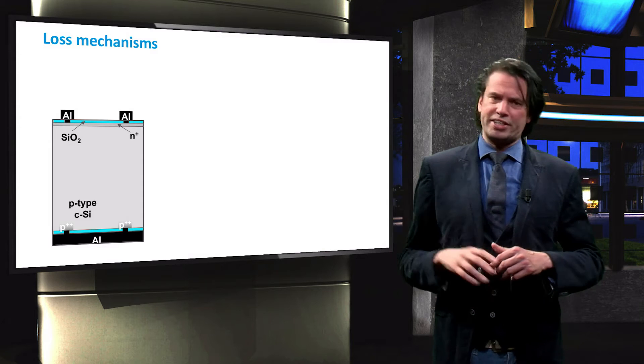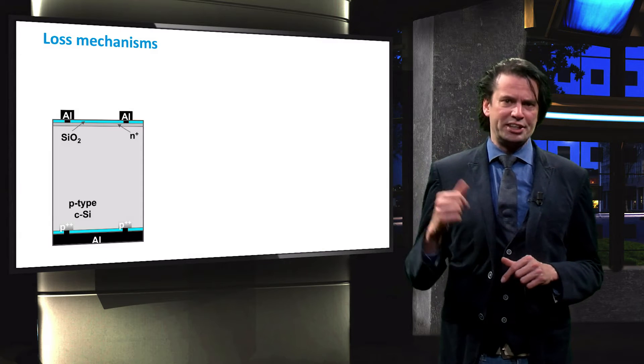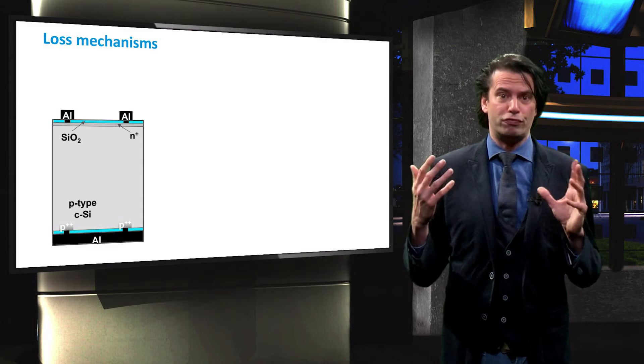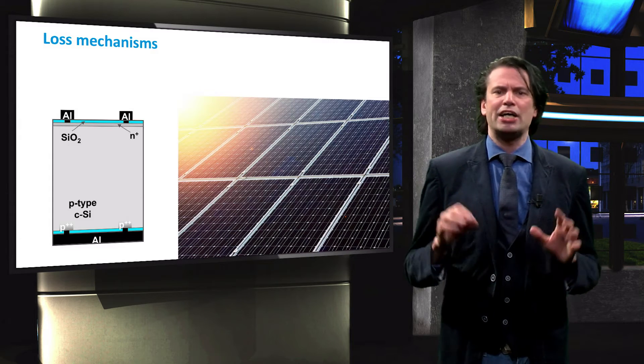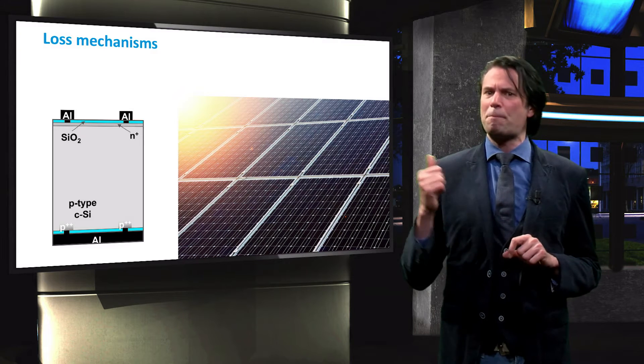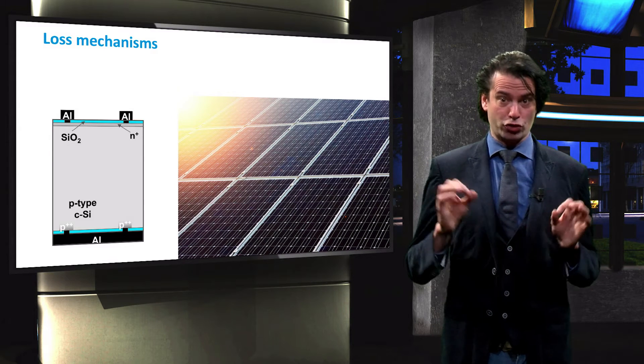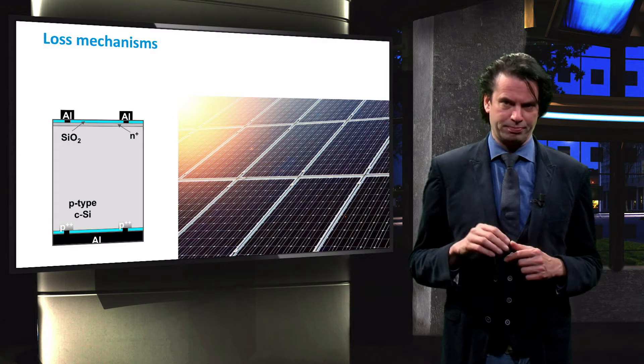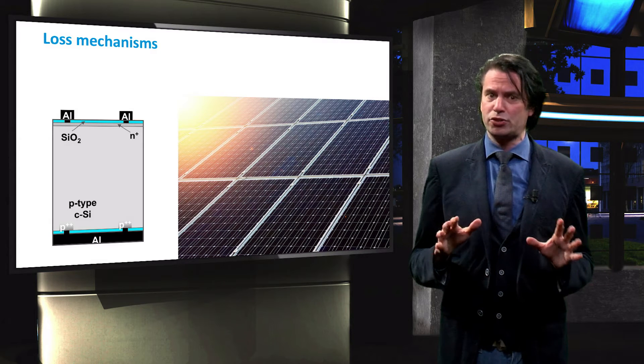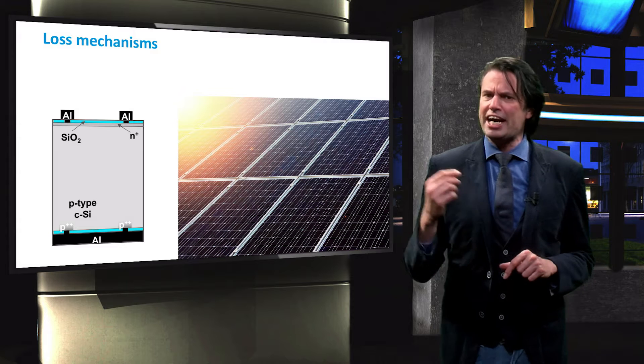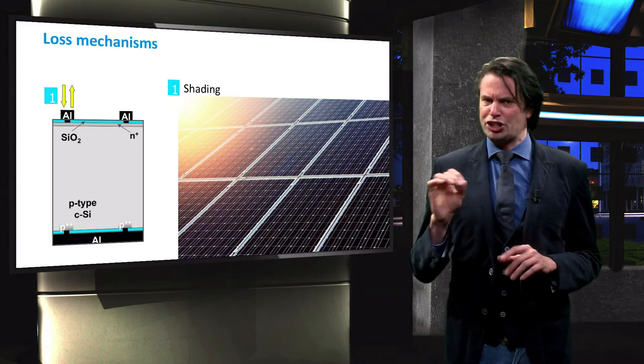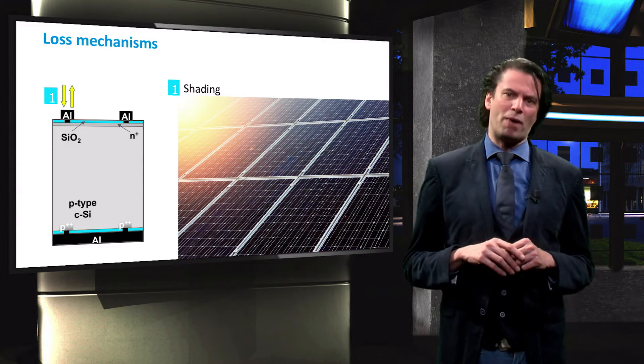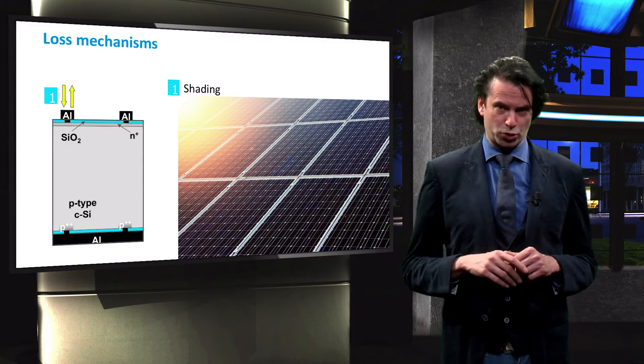We will use the standard crystalline silicon solar cells shown here to demonstrate each of the four main loss mechanisms in solar cells. As we can see in this picture, part of the solar module surface is covered by a metal grid. As this metal grid is not transparent to the incident light, the area under the grid is shaded. These shading losses decrease the amount of sunlight reaching the absorber layer.